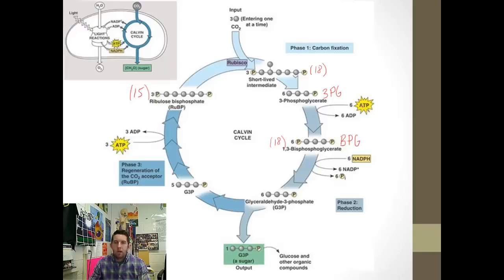Where did this ATP come from? From the light reactions. There's the first time we need those elements from the light reactions. They come into play right here in the reduction phase. Now we have six molecules of BPG. Now here comes our reducing power, our coenzyme NADPH. It drops off its electrons here.